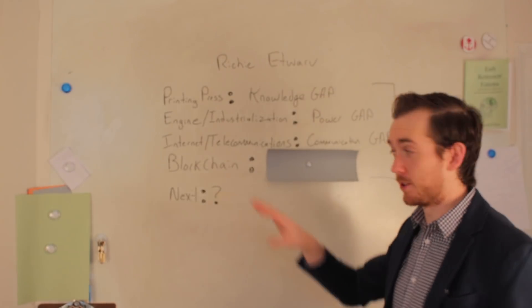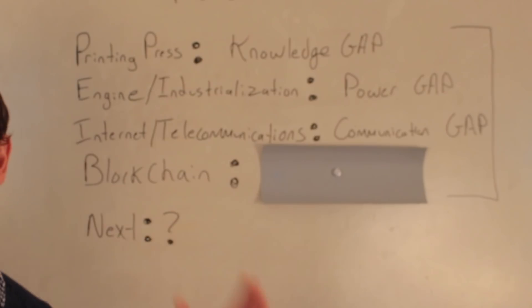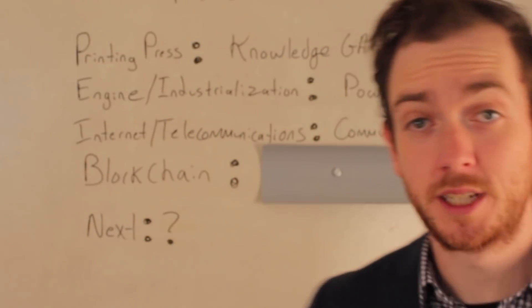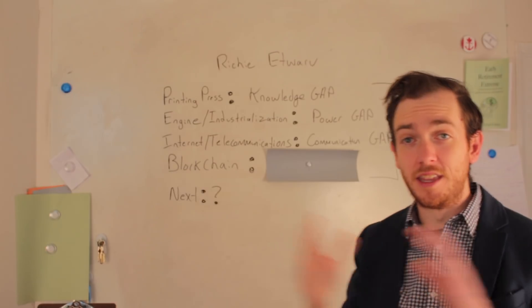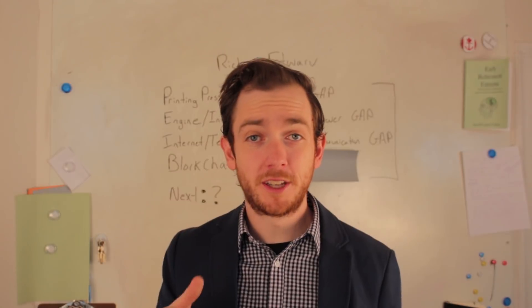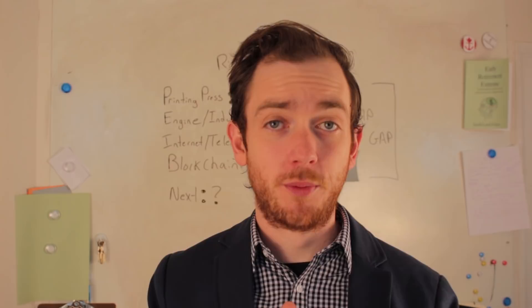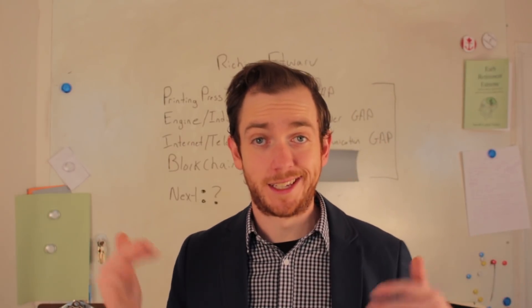And what I found really interesting about it is, he broke out the different revolutions that have occurred in recent memory, in regards to how they transformed our economy, transformed our way of life. And the first one he focused on was the printing press. And so what the printing press revolutionized was the knowledge gap between people. Up until that point, we really just had kind of a ruling class, the clergy, a small educated group that had access to information. Otherwise, everyone else was just kind of in the dark.